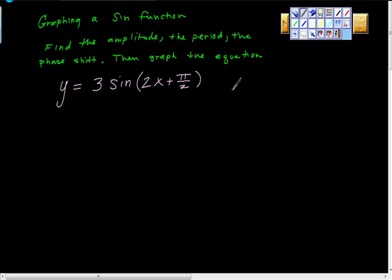Alright, let's start with this. How do we find the amplitude? What is amplitude? Amplitude is given by absolute a. We have the absolute value of 3, which is equal to 3. So amplitude is 3.